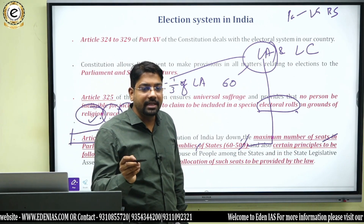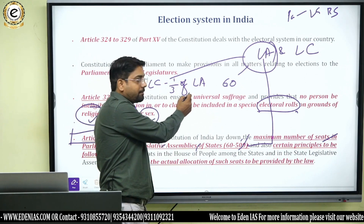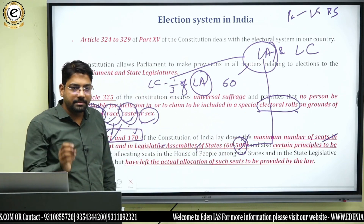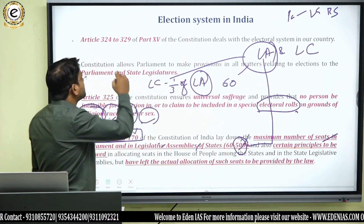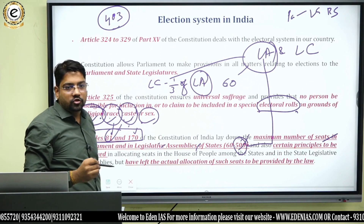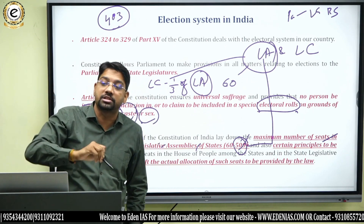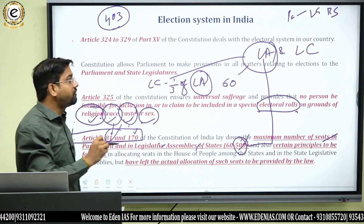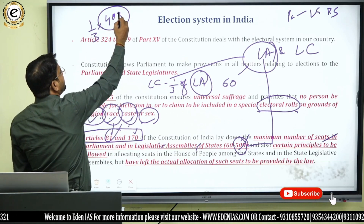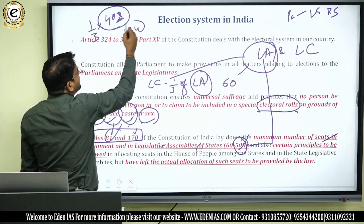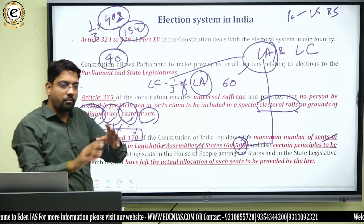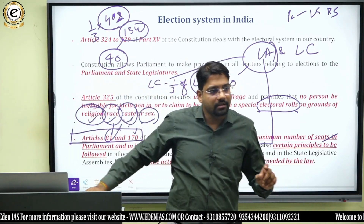The Legislative Council can have a maximum number equal to one-third of the members of the Legislative Assembly, and a minimum of 40. For example, if a state has 403 members in its Legislative Assembly, the maximum count of its Legislative Council would be one-third of 403, which would be approximately 134, and the minimum would be 40.